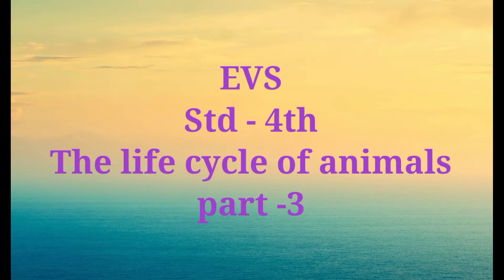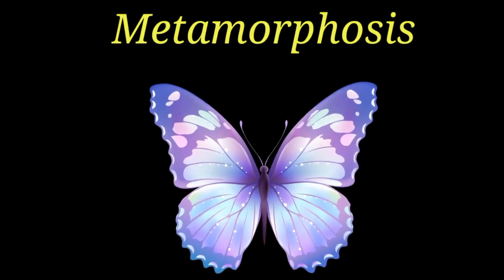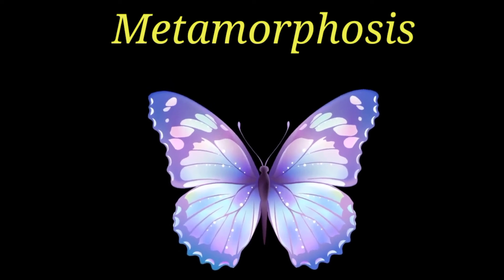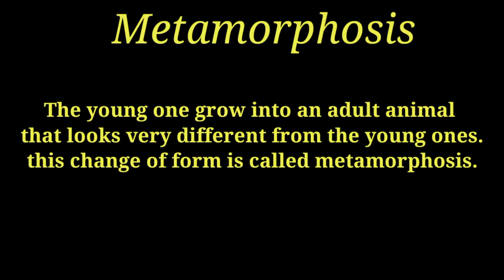Today we are going to study the life cycle of animals, part 3. In our last lecture, we learned that some animals lay eggs, but there are similarities between the goat and its kid, and the hen and her chick. However, a caterpillar and butterfly are very different. In some animals, the young one grows into an adult that looks very different from the young one.